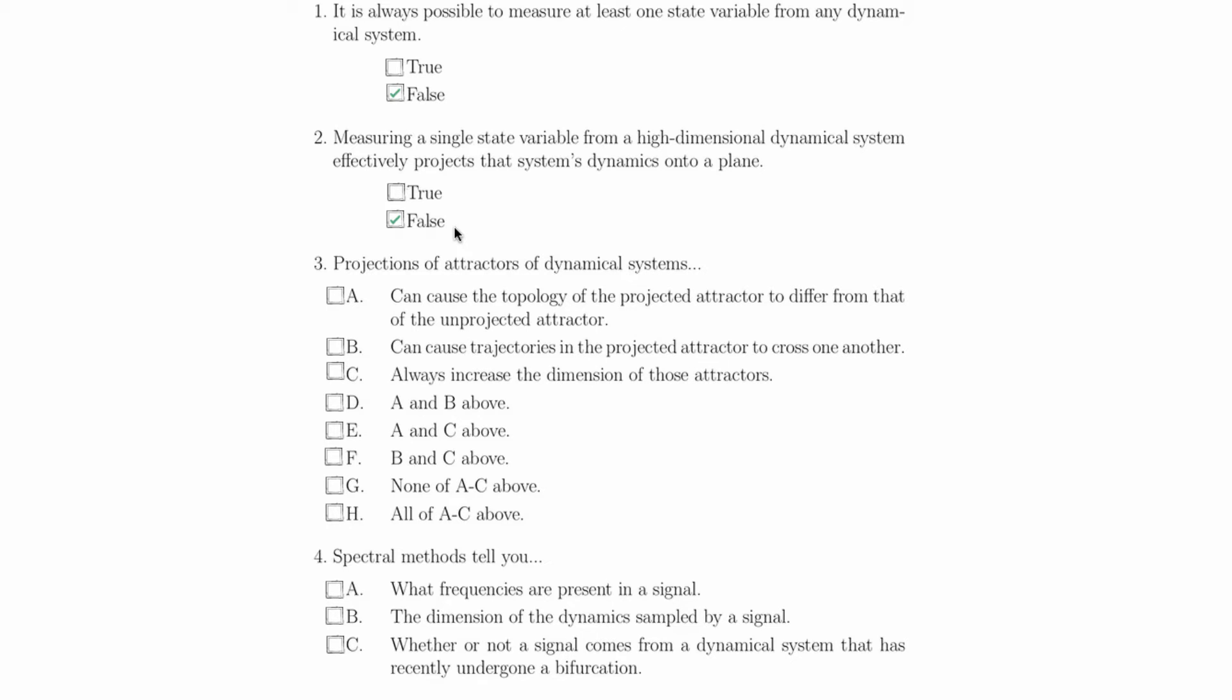To project the dynamics onto a plane, you would need to measure two state space variables, not one. Measuring a single state space variable from a high-dimensional dynamical system effectively projects that system's dynamics onto a line, not a plane.